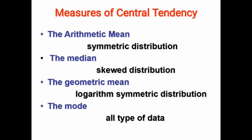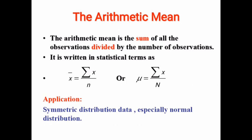There are four measures of central tendency, including the arithmetic mean, the median, the geometric mean, and the mode. Different measures have different application conditions. The first one, arithmetic mean, is used to discover the central tendency of symmetrical distribution data, especially the normal distribution.